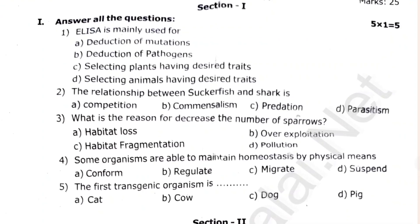ELISA is mainly used as the relationship between sarcophagus and sarcophagus. What is the reason for the decrease in number of sparrows? Some organisms are able to maintain homeostasis by physical means. The first transgenic organism is us. Violin is a part of the body.